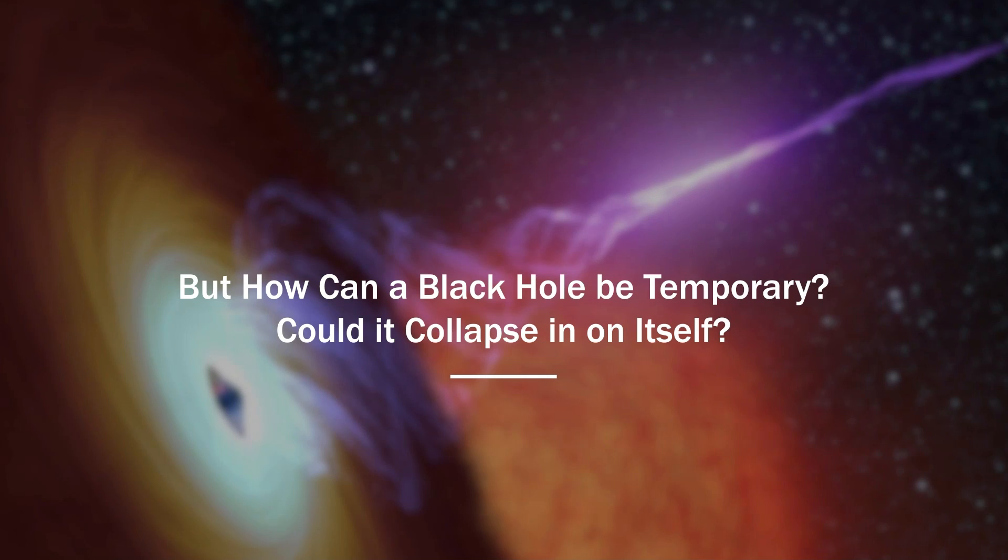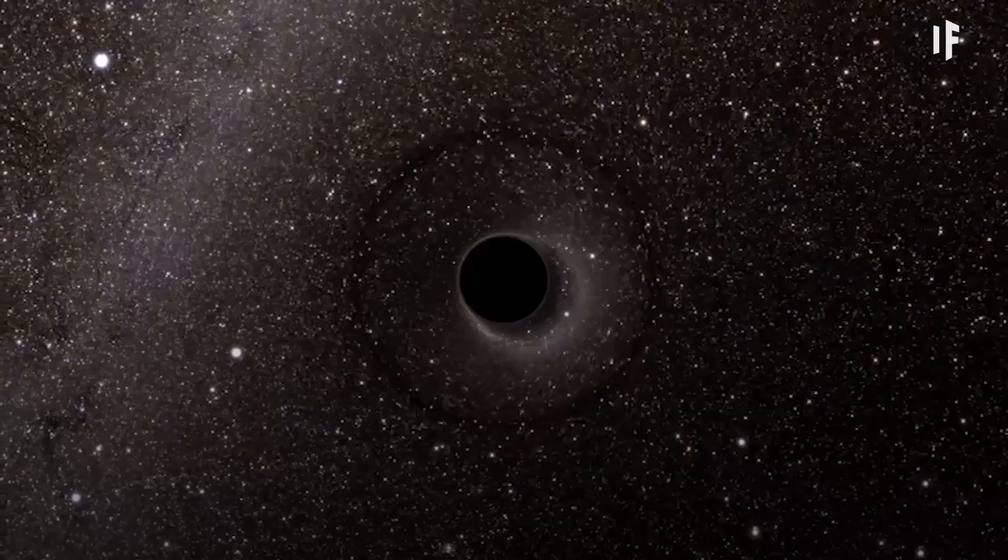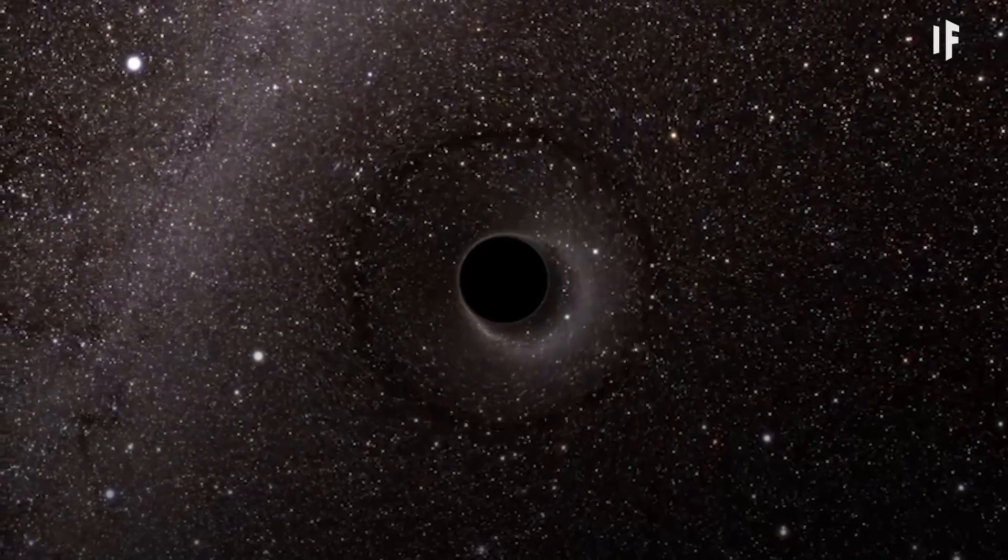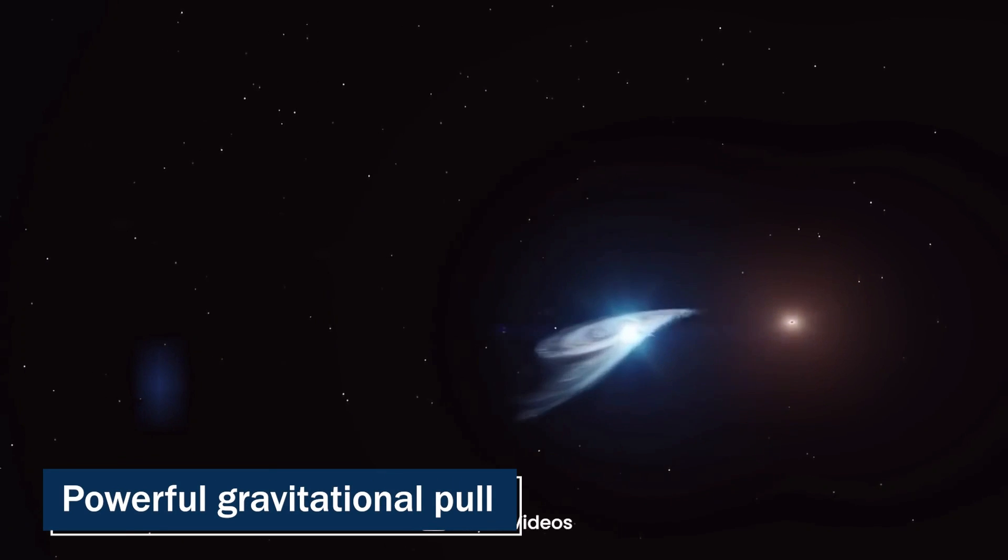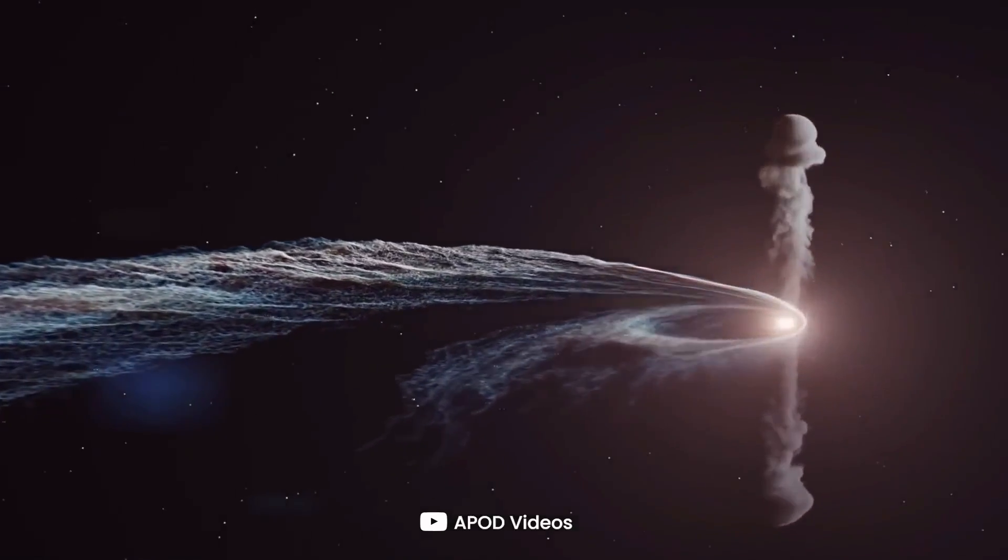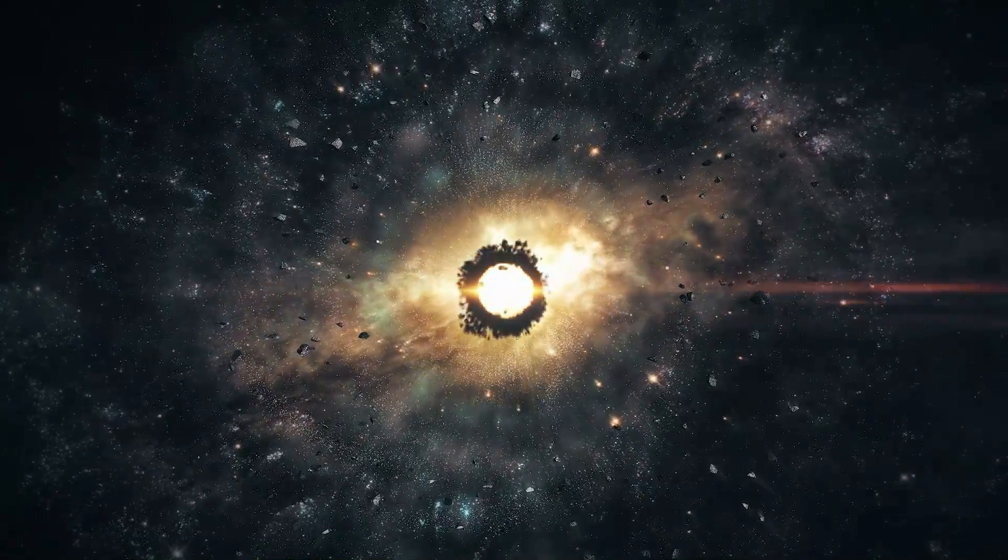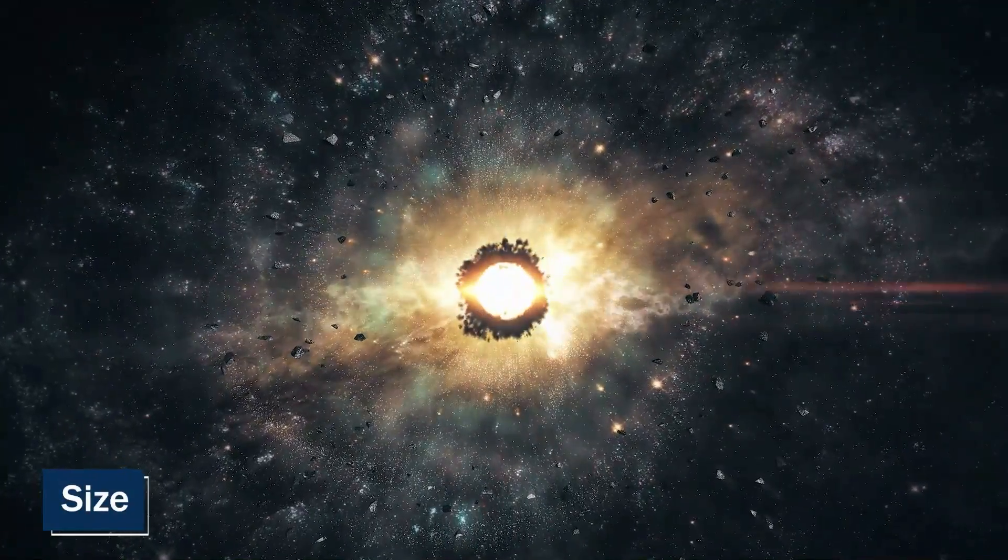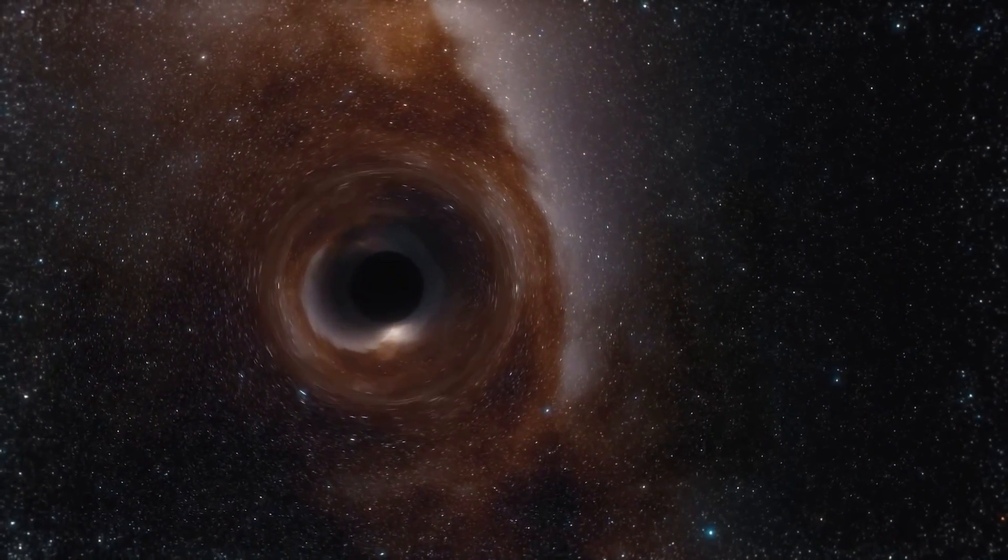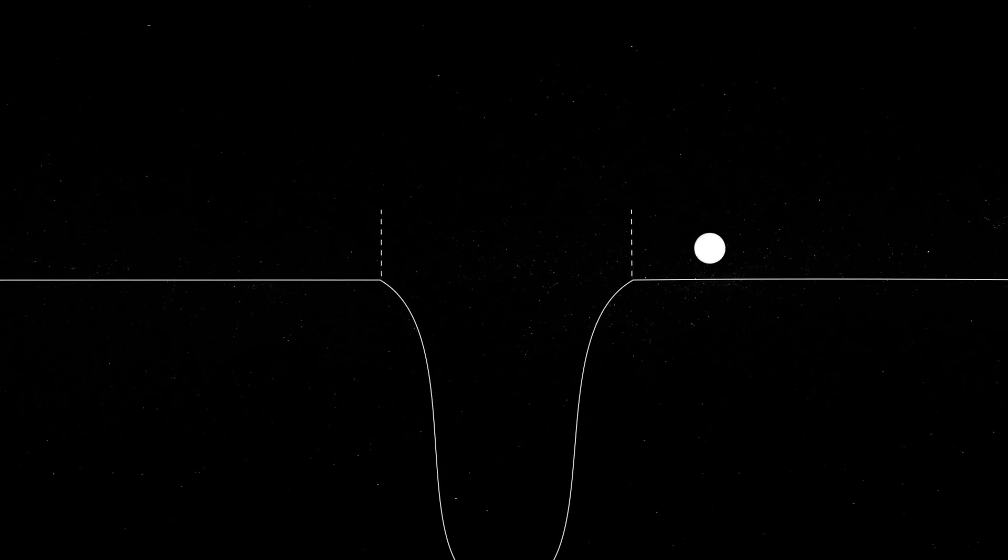But how can a black hole be temporary? Could it collapse in on itself? Black holes are some of the most mysterious and fascinating objects in the universe. Their enormous size and powerful gravitational pull give them a pivotal role in how galaxies form and evolve. But what truly makes black holes so intriguing is their event horizon, or the size of a black hole. This property is directly connected to the mass of a black hole, meaning that the larger a black hole is, the bigger its event horizon will be.